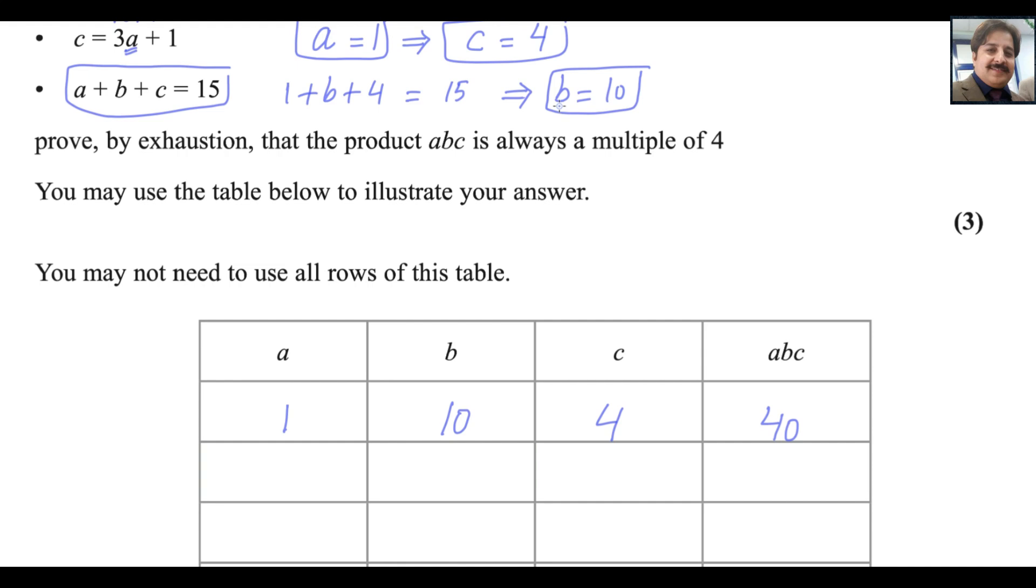Now use another integer like 2. If you use 2 here, what will be c? 3 multiply 2 is 6, 6 plus 1 is 7. Sum of these three numbers should be 15 according to this rule, so 7 plus 2 is 9, 9 plus 6 will be 15, so b will be 6. Multiply them together: 6 multiply 2 is 12, 12 multiply 7 will be 84.